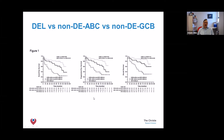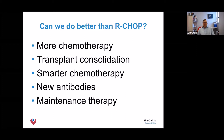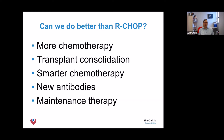R-CHOP works pretty well for most people with DLBCL, but there are some patients we'd very much like to offer better treatment. Over the years since the turn of the century, there have been several smart ideas: could you give more chemotherapy, do a stem cell transplant after R-CHOP, give chemotherapy in a smarter way, or bring in new drugs?